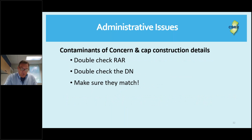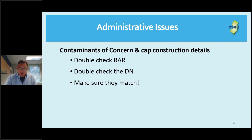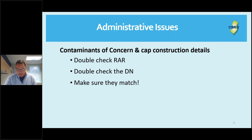There were a number of WRAP applications with inconsistent details regarding constituents of concern or cap construction details. Double-check your RIR to make sure it matches the deed notice and the permit application. The cost to fix a deed notice after it's been submitted if incorrect will greatly exceed the cost to do a quick double-check beforehand to ensure your RA report, deed notice, and WRAP application all match.